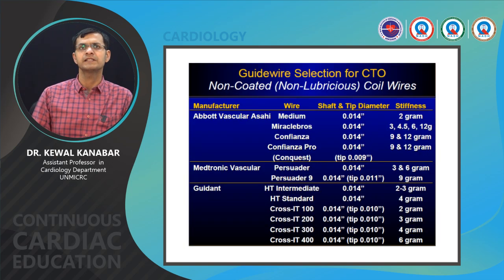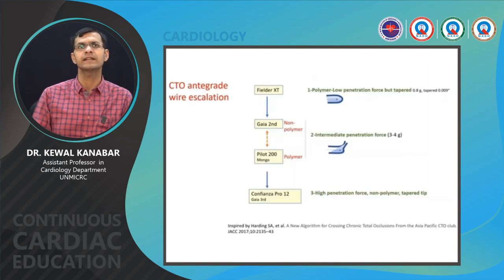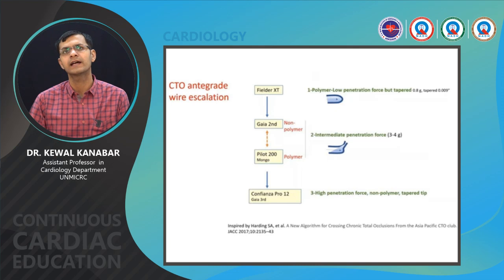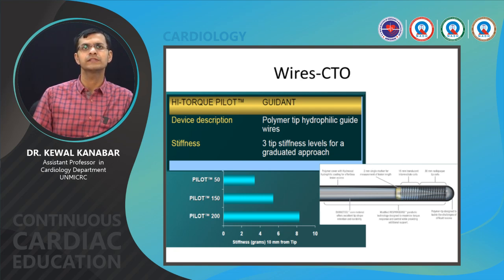Non-coated guide wires include the Miracle wire and the Crossit 100, 200, and 400. For CTO antegrade wire escalation, always start with a wire like Fielder XT, Fielder XTA, or Fielder XTR — polymer coated wires that may find micro channels. Then escalate to hard wires like Gaia Second, Gaia Third, then to Pilot 200. If none of these work, proceed with Confianza Pro, Gaia Third, or Miracle 12.